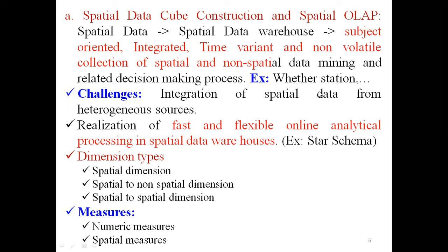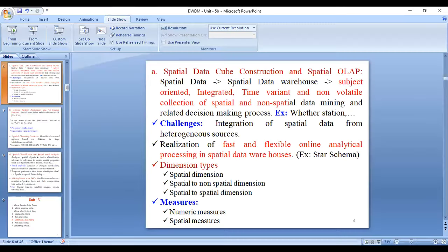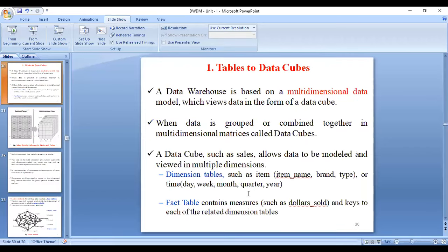The data warehouse is always based on a multi-dimensional data model. That means you have an n-dimensional data model which views data in the form of a data cube. The data cube consists of different tables: dimension tables and fact tables. This is called multi-dimensional data.